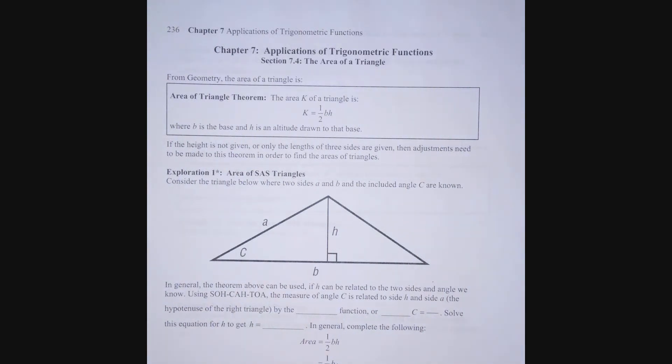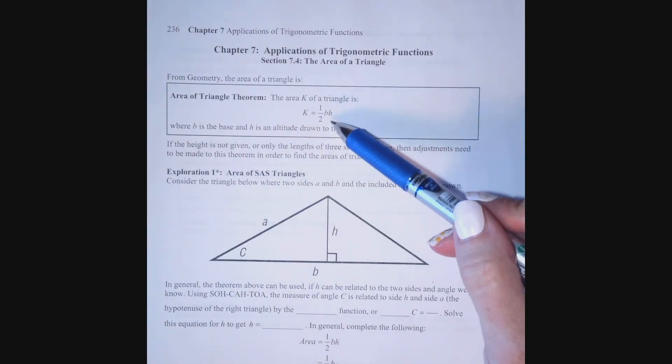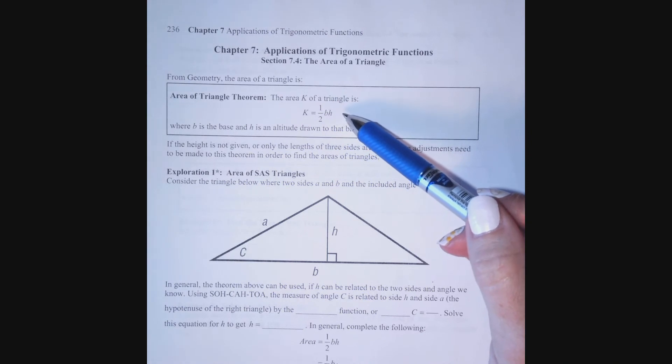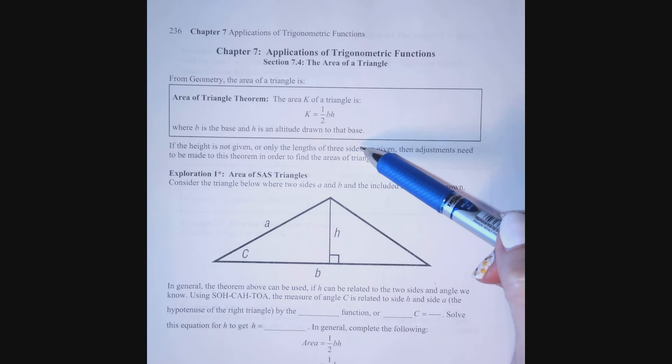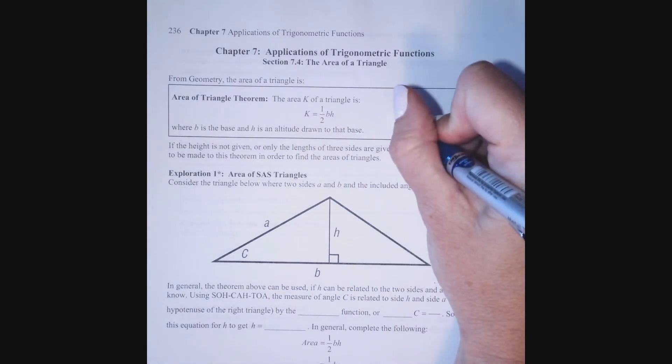All right, in this last section that we are going to cover of chapter 7, chapter 7 section 4, we're going to talk about finding the area of a triangle. Now, you're used to finding the area of a triangle where we use the formula area equals one-half base times height. This is true for any triangle where B is the base and H is the height drawn to that base.